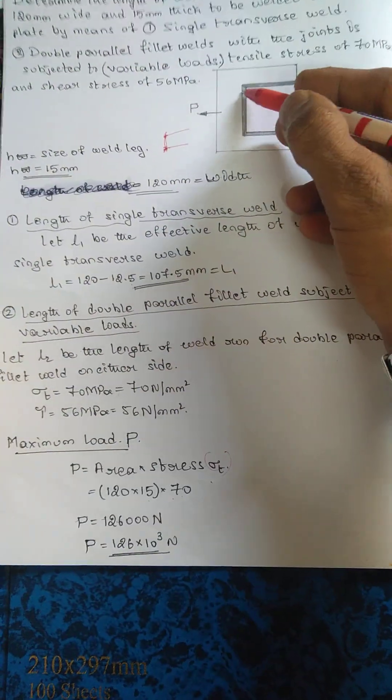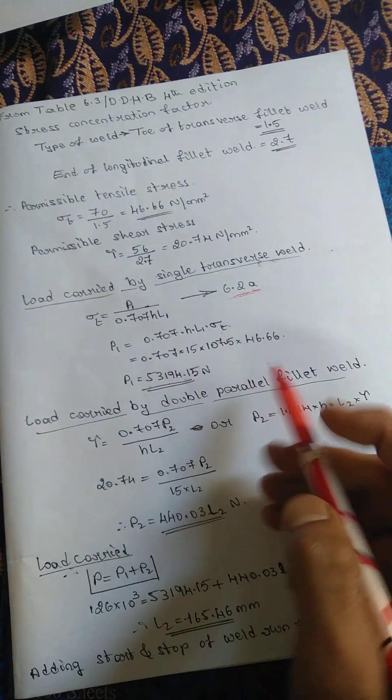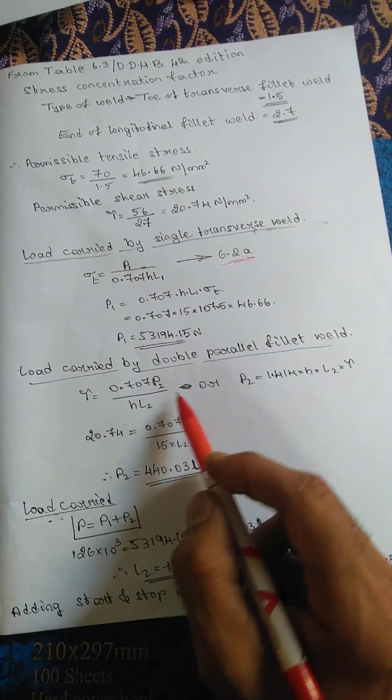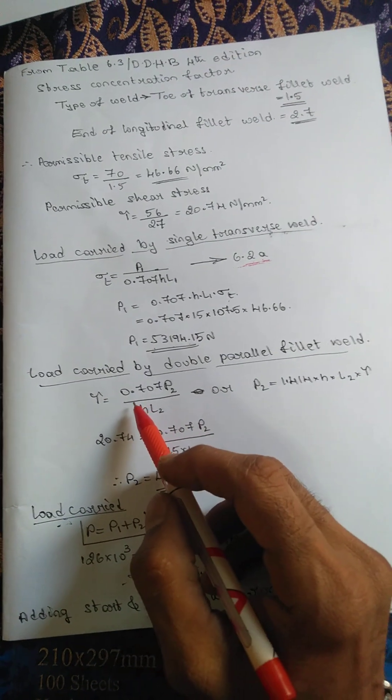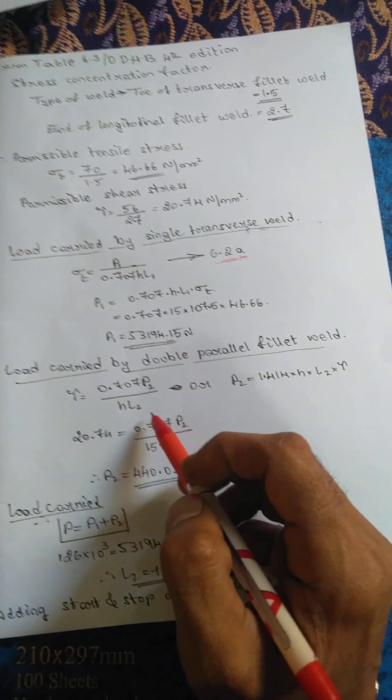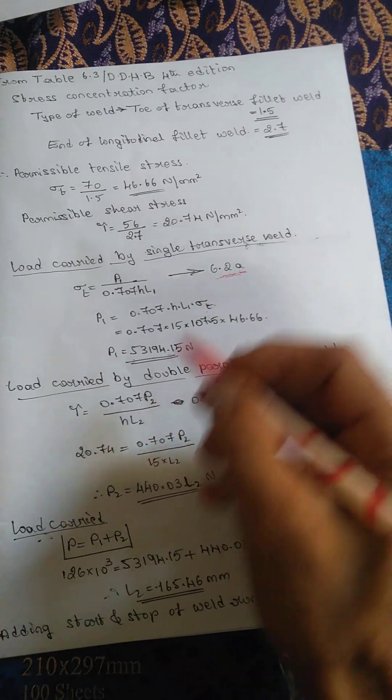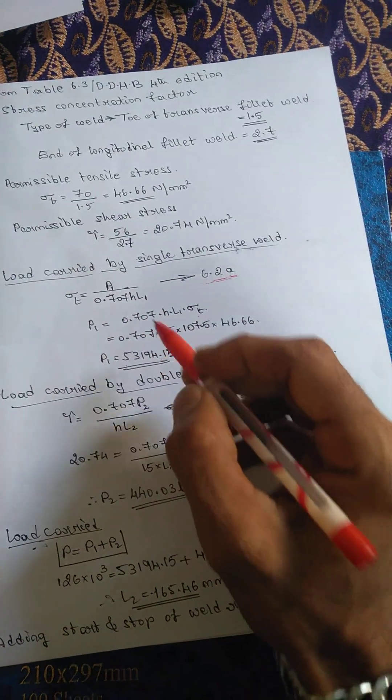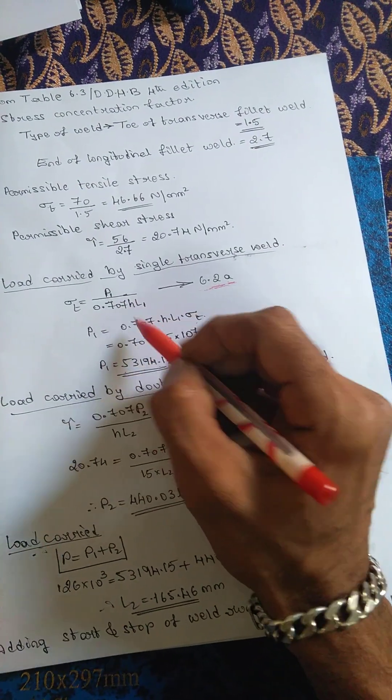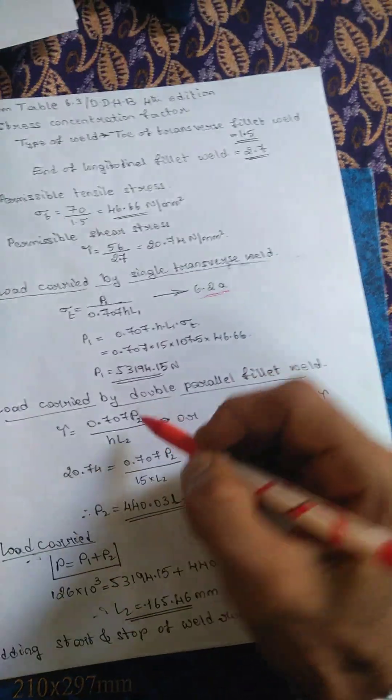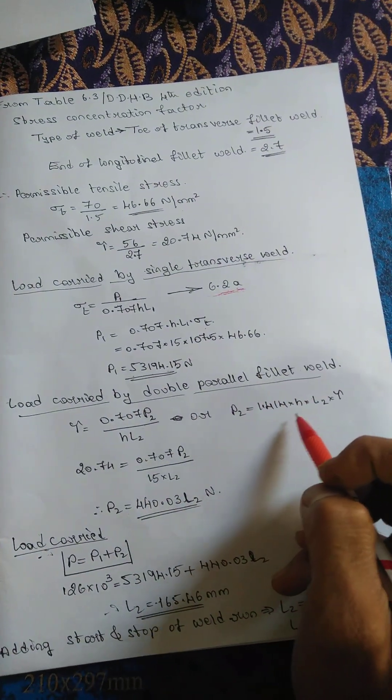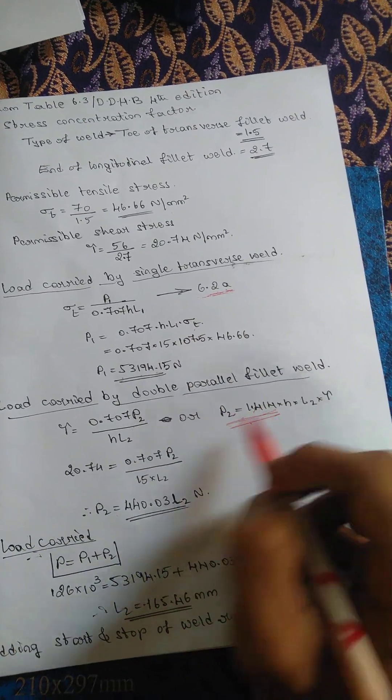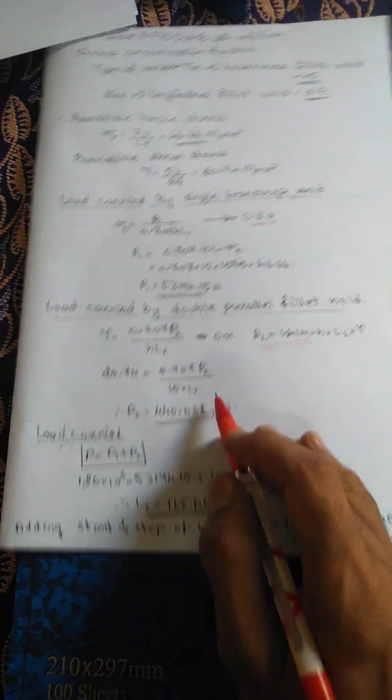Next, for P2, for double parallel fillet weld, the equation is 0.707 P2 by HL2. This equation is given along with the previous one. Here 0.707 is underneath, here it's on the numerator, or else you can write it in this form as well - both are same. If you write any of them you'll get same answer.